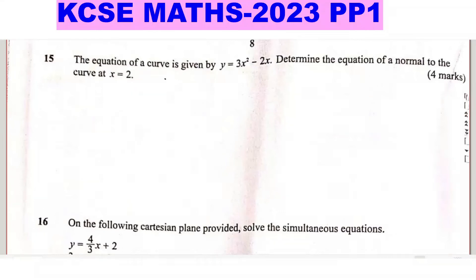Question 15. The equation of a curve is given by y equals 3x squared minus 2x. Determine the equation of a normal to the curve at x equals 2.